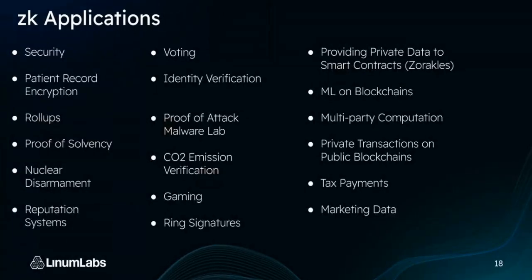Here is a list of zero knowledge applications. Security: it's great for obscuring data, and like the password example, I can prove I know my password without giving it to you — so it doesn't matter if you get hacked. Another is patient record encryption: we can perform computations and analyses on patient records in a storage application, but they're not linked to any one patient. We can store patient records on blockchains encrypted through zero knowledge proofs, so you can't see the actual patient data.